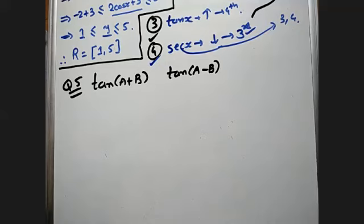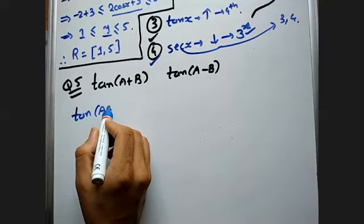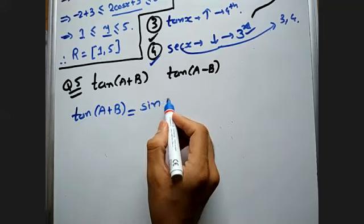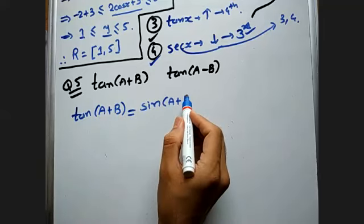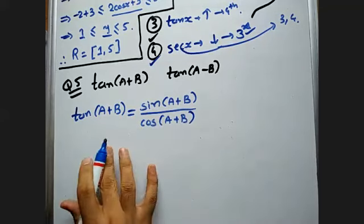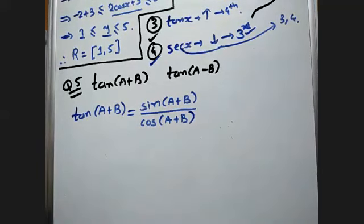Mind well, here we have to use only sin(A+B) and cos(A+B) — we are not given sin(A-B) or cos(A-B). So tan(A+B) will become sin(A+B) divided by cos(A+B).